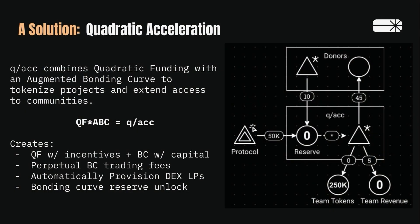And so this is the innovation — Quadratic Acceleration, QAC. It's a combination of QF and a special class of bonding curve called the augmented bonding curve, that is used to tokenize projects and extend that tokenization access to communities. Instead of a protocol giving a direct grant to a team, it goes into a bonding curve which creates a new token economy. That team gets the first initial large portion of those tokens. Then a QF round is held where when people donate, they don't donate for nothing — they actually donate and it generates tokens and creates access for those donors. This is the novel mechanism. It provides QF with incentives and bonding curves with capital.